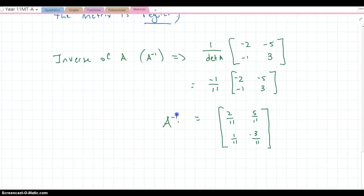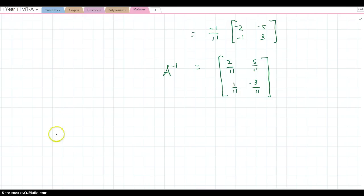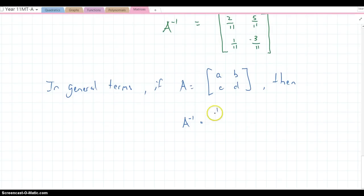So that is the inverse of A. That's A minus 1. So generally, in general terms, if A is equal to ABCD, then A minus 1, the inverse of A, is 1 over AD minus BC, which is the determinant of A. D and A switch places, and B and C change sign. And that's how to find the inverse of a matrix.